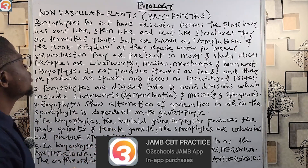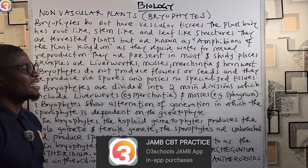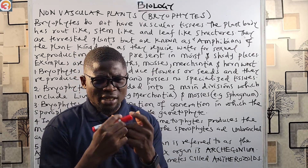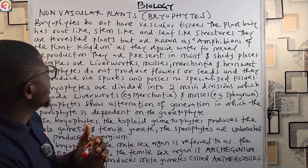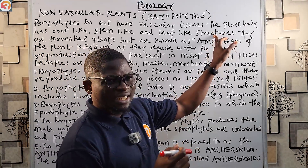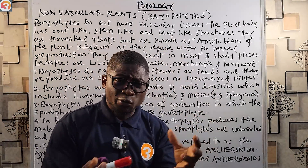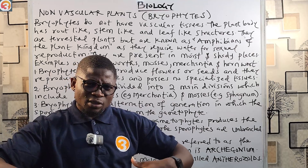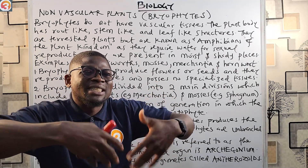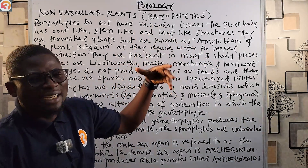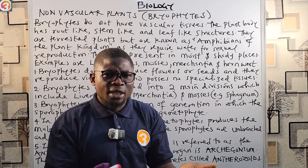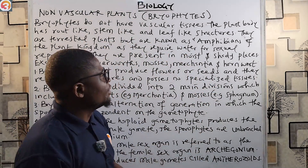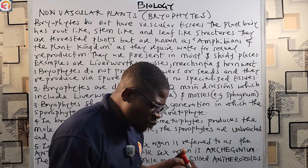Now let's talk about the bryophytes. Bryophytes do not have vascular tissues — that means they do not have specialized tissues for the transportation of minerals and other resources. The plant body has root-like, stem-like, and leaf-like structures. If you watched the last episode, we talked about the thallophytes — the thallus cannot be differentiated into distinct parts like the stem, root, and leaves. In fact, thallophytes do not have true roots. But bryophytes do — they can differentiate into different parts like roots, stem, and leaves.